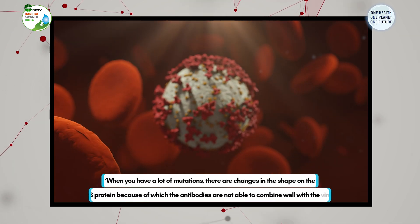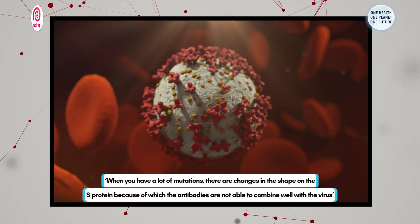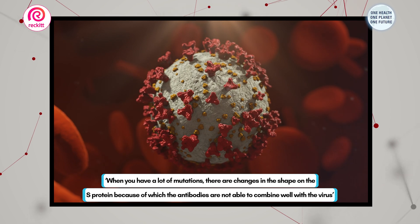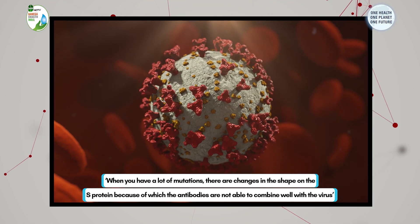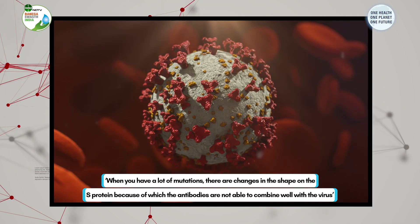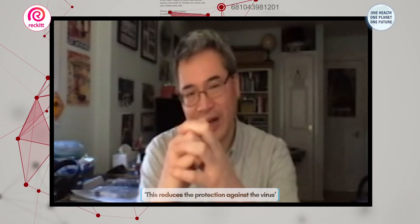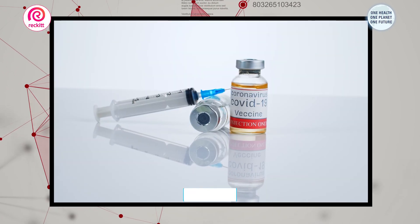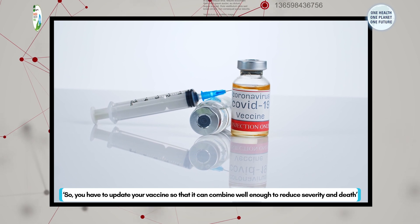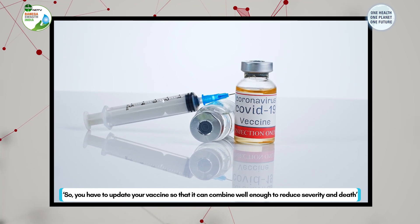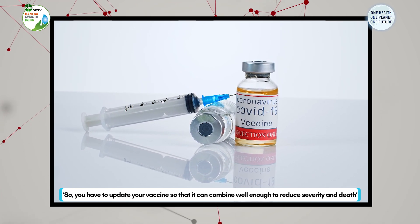But when you have lots of mutations, what happens is that you have different shape changes in the S protein that your antibodies induced by the vaccine can't bind as well to, and that reduces the protection against the virus for those variants. So you have to update your vaccine, or you have to try and avoid getting infected by the new variant that's not well protected by the vaccine.